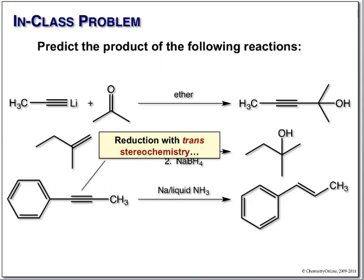Because it's radical, an intermediate forms that adopts the most stable conformation — which is trans — and then picks up the other hydrogen to give the alkene.